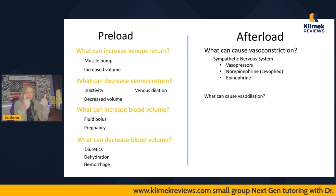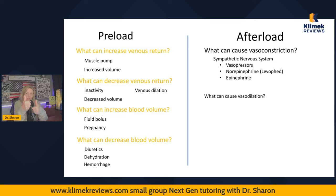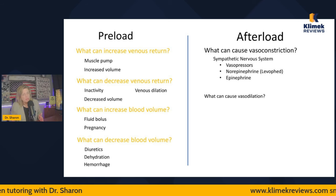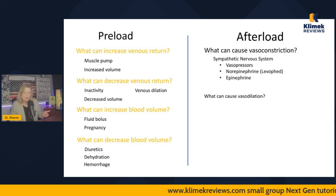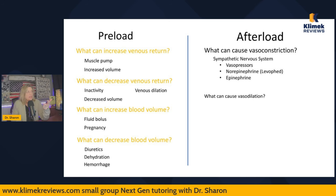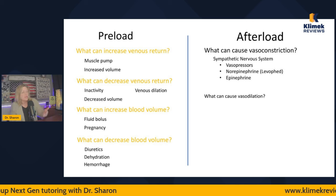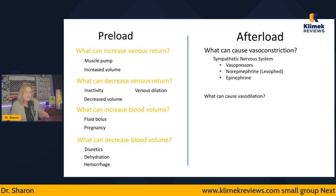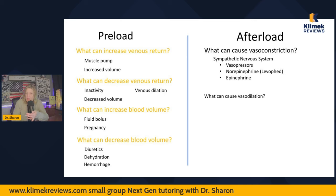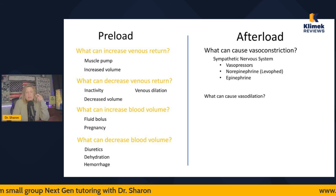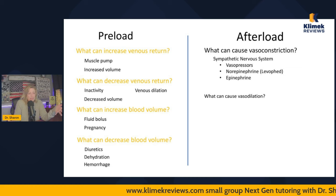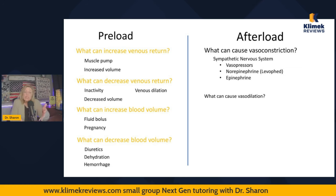Primarily the sympathetic nervous system causes vasoconstriction, or we can give sympathomimetics — drugs that mimic the sympathetic nervous system. The neurotransmitters include epinephrine, norepinephrine, and dopamine — these are all sympathomimetics. You can give vasopressors like dopamine, dobutamine, norepinephrine (Levophed). We put patients who have very low blood pressure — like in shock — on a Levo drip in the ICU. That causes vasoconstriction.